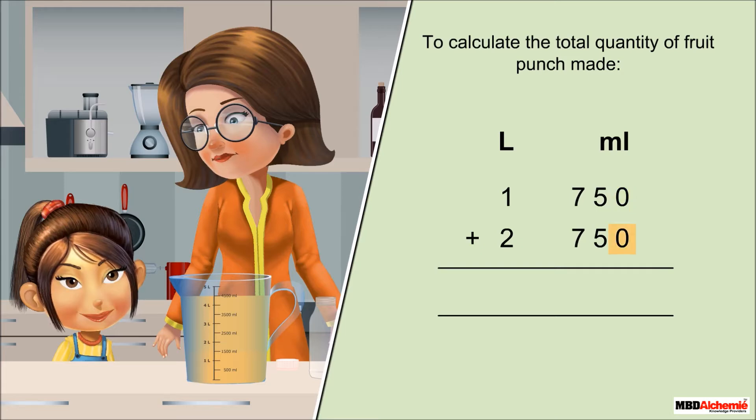0 plus 0 is equal to 0. 5 plus 5 is equal to 10. Regroup 10 milliliters. 7 plus 7 plus 1 is equal to 15. Regroup 1500 milliliters as 1 liter and 500 milliliters. Carry over 1 liter to liters column.